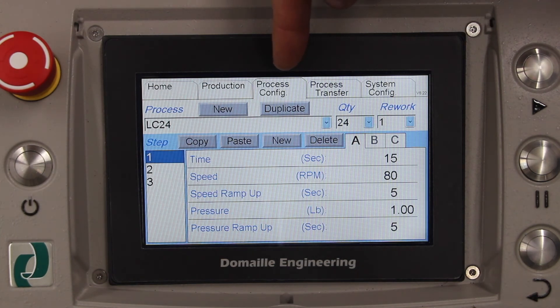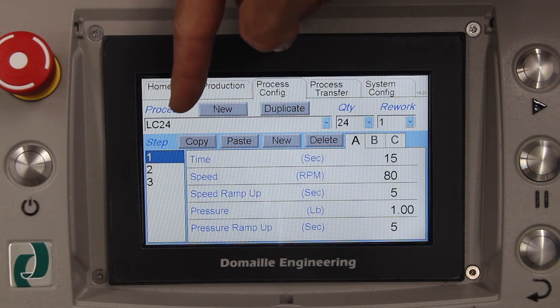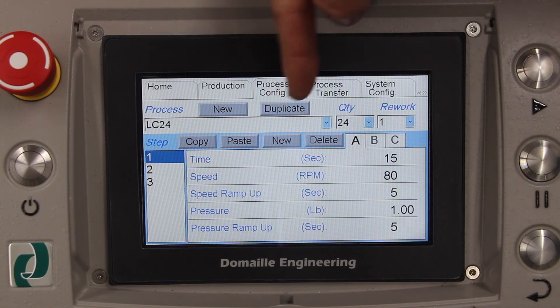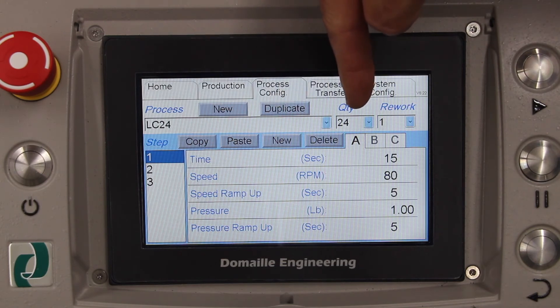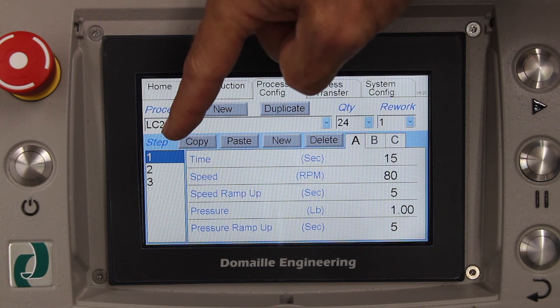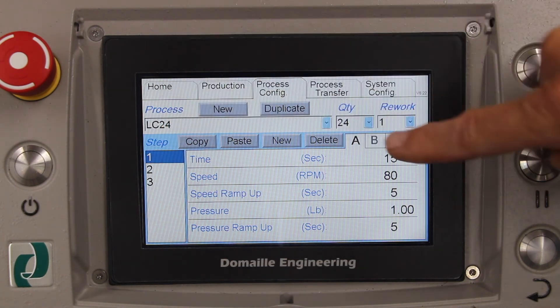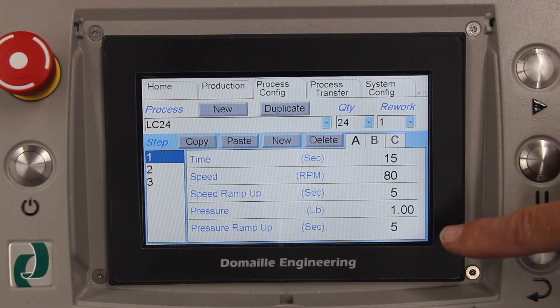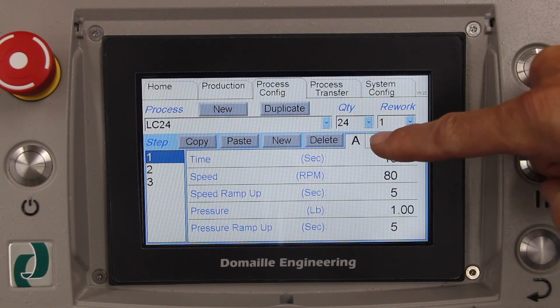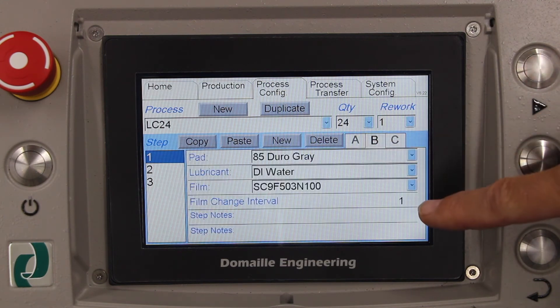The process tab is where you store your polishing processes by unique name, specific values for number of connectors being polished, number of steps as well as time, speed, and pressure, and on the next page, pads and film for each step. This section can be password protected so the operator cannot change any details.